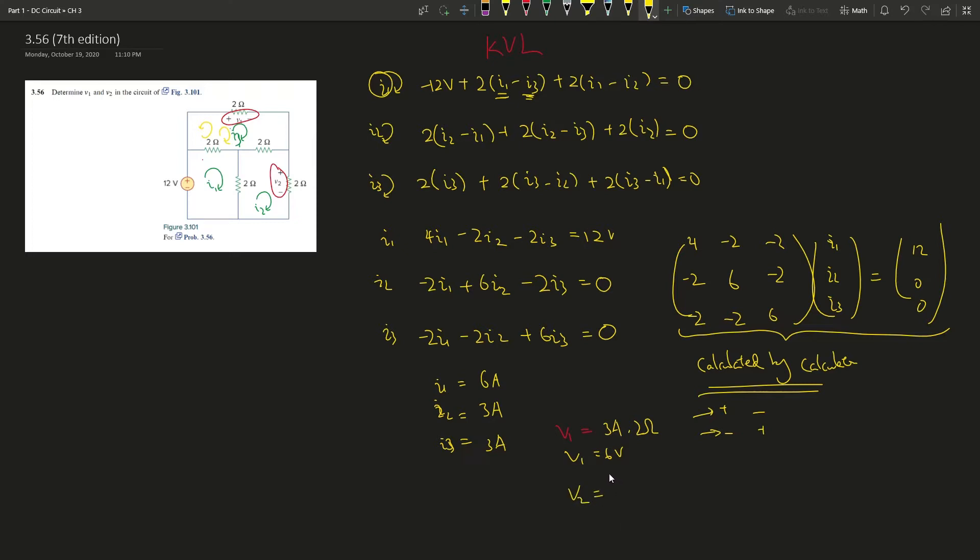And then v2 is, v2 is what? i2 is 3 amperes times 2 ohms, so v2 gives you 6 volts as well. And so both volts equals to each other, right? They have the same magnitude.